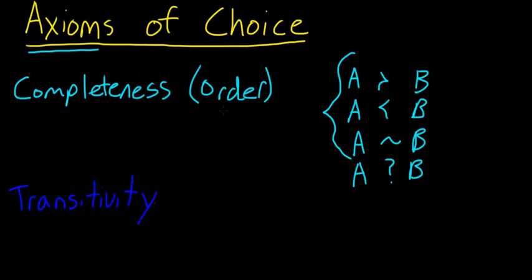So while completeness requires that people have to have preferences between bundles, transitivity requires that those preferences have to be consistent. So what this means is that, let's say that we have three possible bundles: A, B, and C.